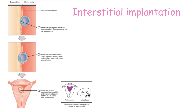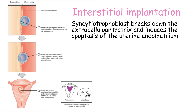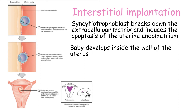Humans have what is called interstitial implantation, where the embryo completely burrows into the superficial layer of the endometrium. The syncytiotrophoblast breaks down the extracellular matrix and induces apoptosis of endometrial cells, allowing for implantation. So the baby ends up developing inside the wall of the uterus and not necessarily at the lumen of the uterus.